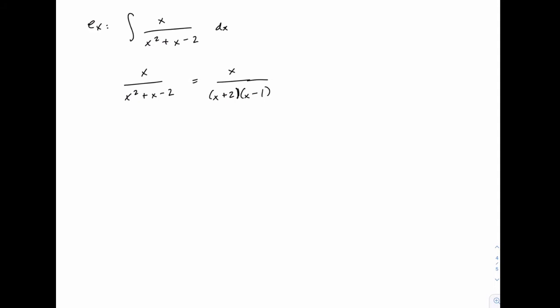Once we have that factored, the next step is to write down the form of the partial fraction. Since there's no repeated terms, this is as simple as it gets. x plus 2 gets its own partial fraction and x minus 1 gets its own partial fraction. One for each factor in that denominator.